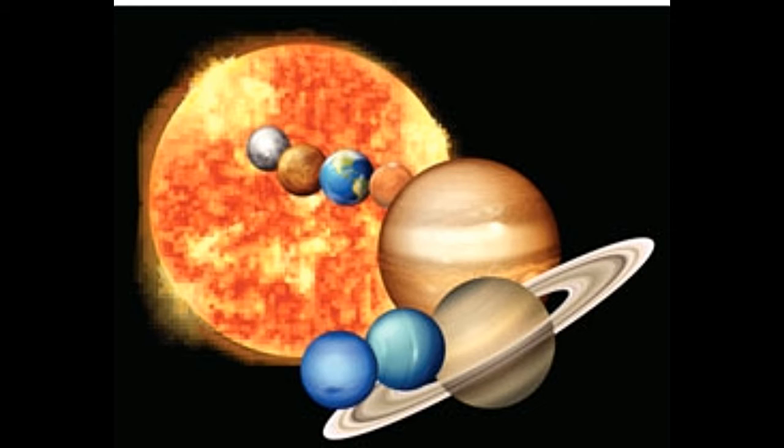Until 2006 the number of planets in our solar system was 9, but the exclusion of Pluto has left us with only 8 planets.